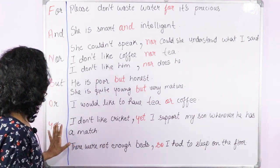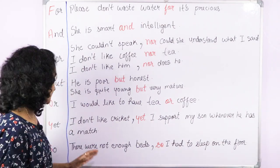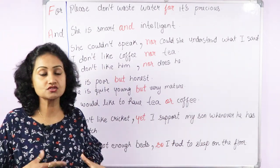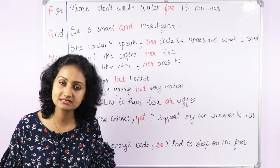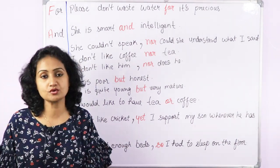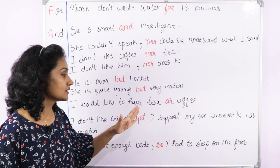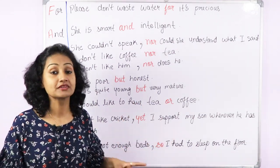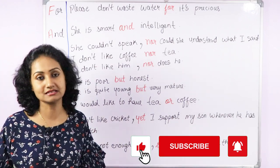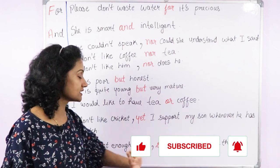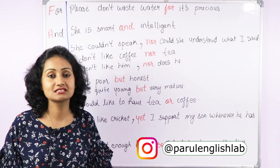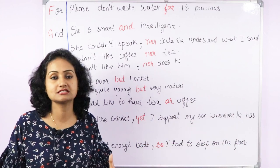Next is 'yet.' Yet also shows contrast. For example: 'I don't like cricket, yet I support my son whenever he has a match.' Both 'but' and 'yet' show contrast, so you can use either: 'I don't like cricket but I always support my son' is also correct. Another example: 'It's sunny yet the wind is quite cold' — or 'It's sunny but the wind is very cold.'